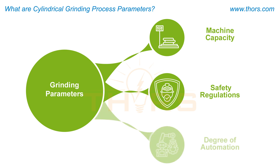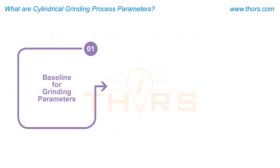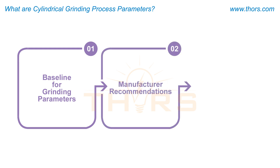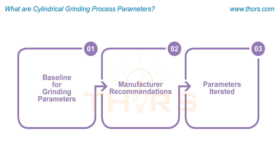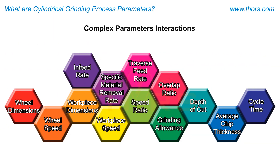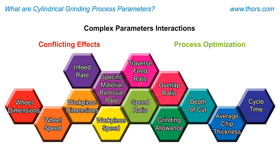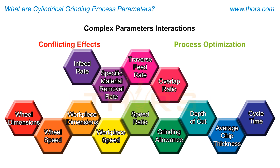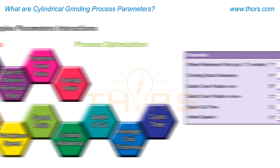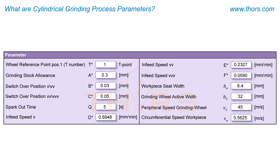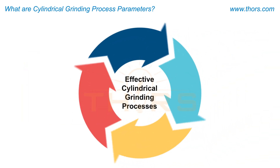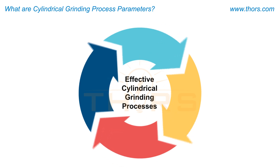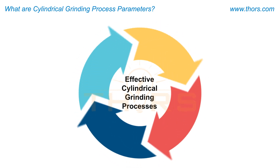The grinding parameters are established within the limits of the machine capacity, safety regulations, and degree of automation. The baseline for grinding parameters can be established from the manufacturer recommendations; however, parameters are iterated to optimize the process. The complex interactions of the various parameters may result in conflicting effects. Process optimization involves moderating those effects by adjusting the grinding parameters for efficient grinding.